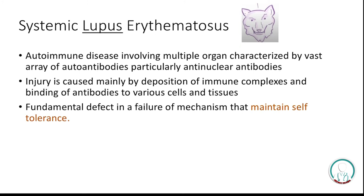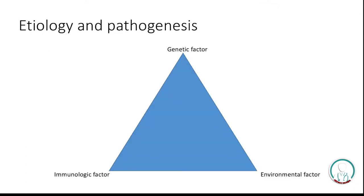Our second topic is systemic lupus erythematosus. Lupus means wolf. This is an autoimmune disease involving multiple organs, characterized by a vast array of autoantibodies, particularly anti-nuclear antibodies. Injury is caused mainly by deposition of immune complexes and binding of antibodies to various cells and tissues. The fundamental defect is a failure of the mechanism that maintains self-tolerance — the unresponsiveness of the immune system against our own antigens. The etiology and pathogenesis of SLE involves genetic, immunologic, and environmental factors; not one factor can solely explain the pathogenesis.